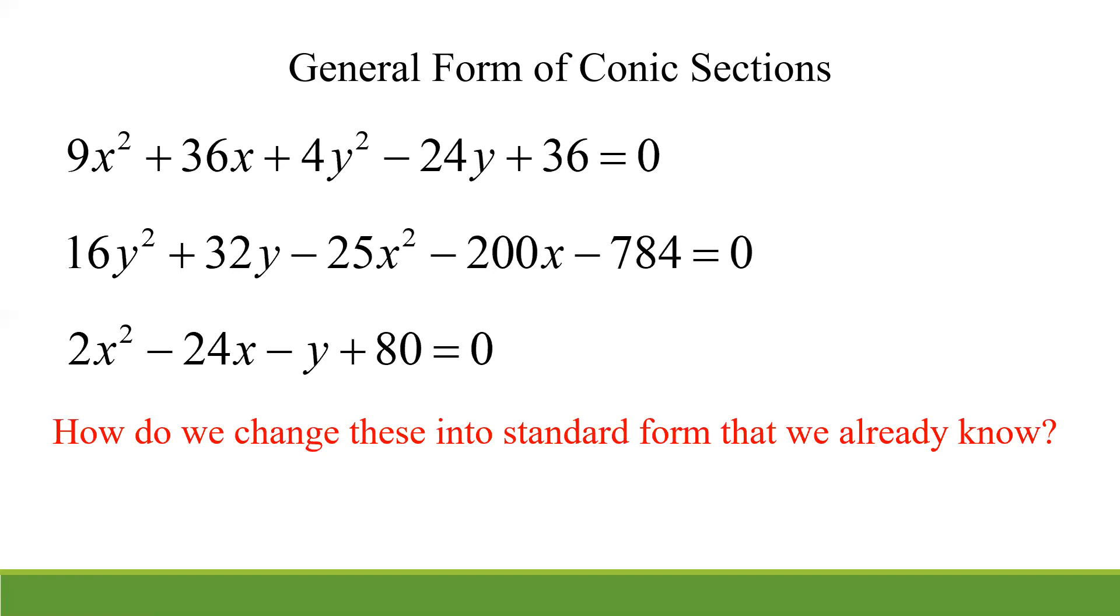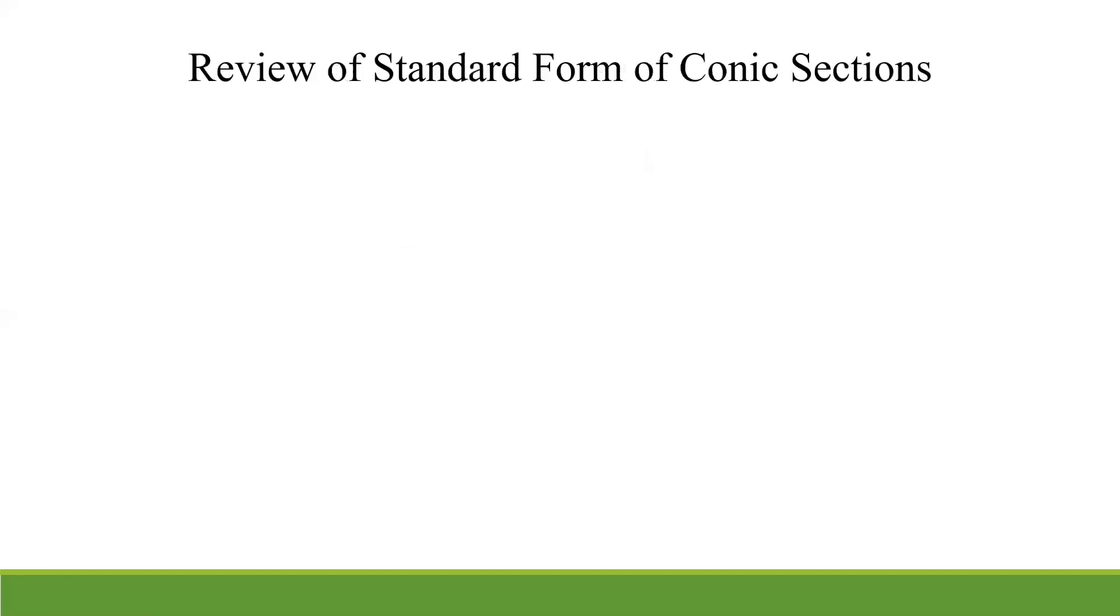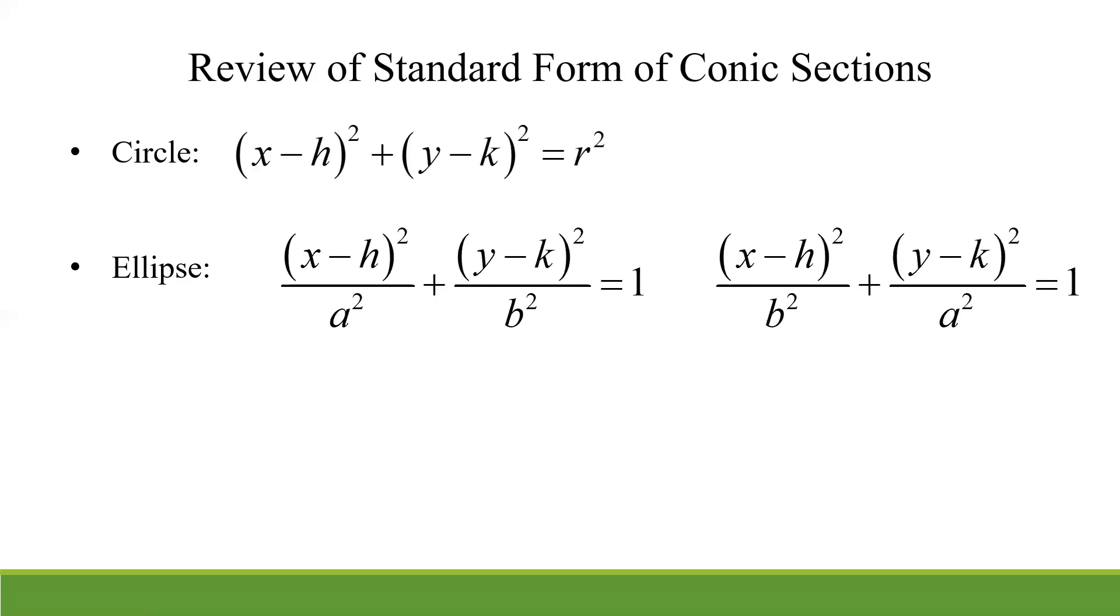So the question is how do we change that back into the standard form that we already know? Well before we do that, let's review real quick what those standard forms look like. So remember for circle and the ellipse, we basically did those at the same time because when we talk about the ellipses, if that a and the b value were the same thing, that was the special case of the ellipse which became the circle.